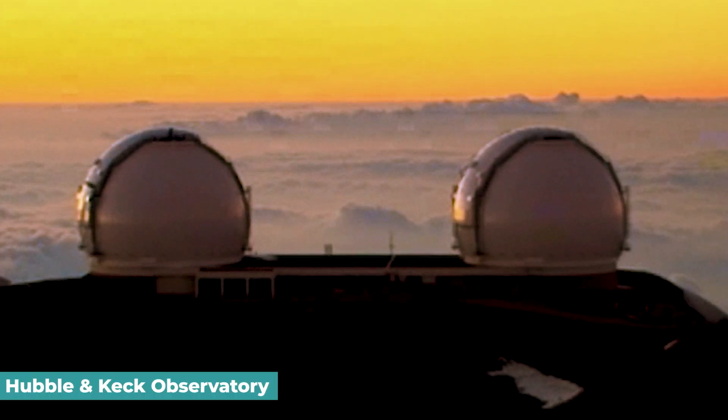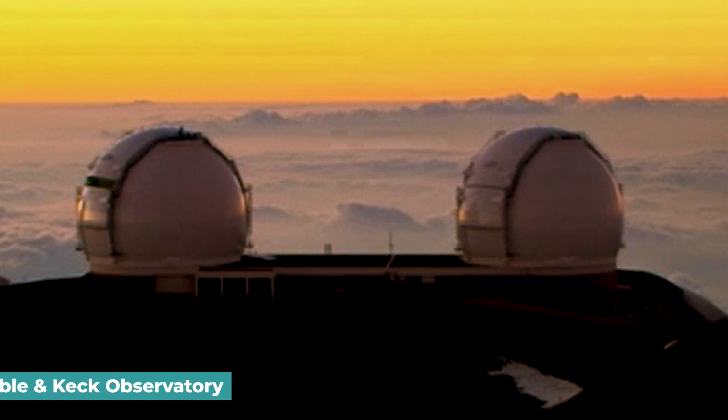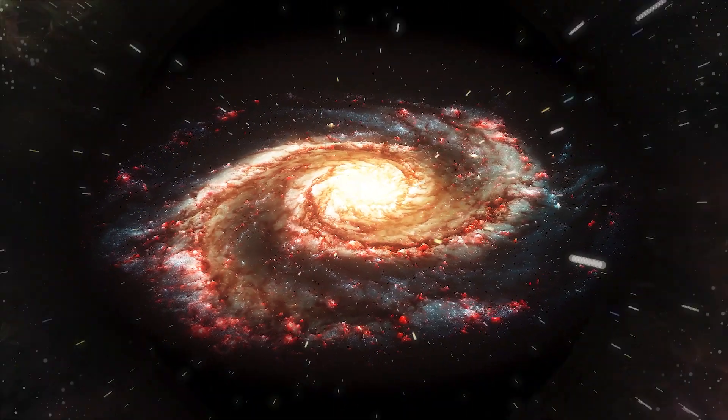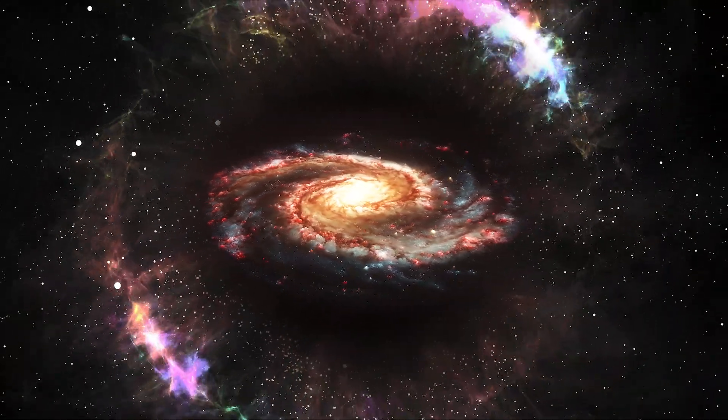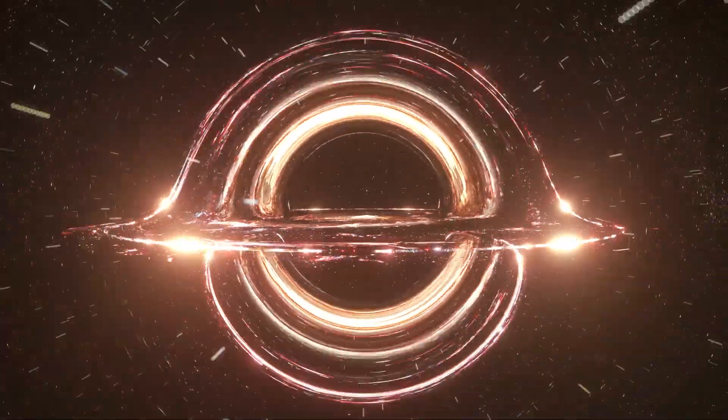Hubble and Keck data are more consistent with the idea of a runaway supermassive black hole. In the center of a freshly created galaxy is a vast black hole that dwarfs even the most significant supermassive black holes.